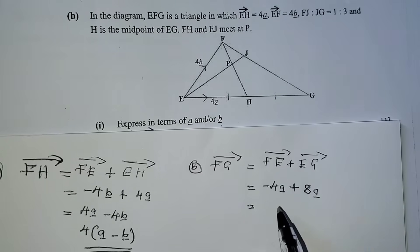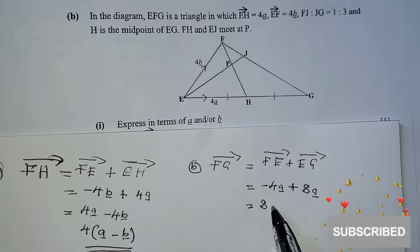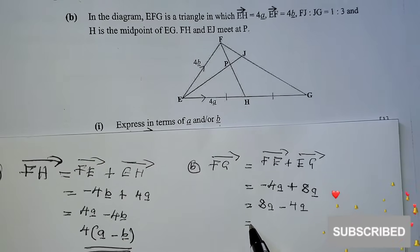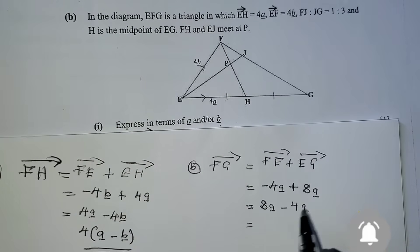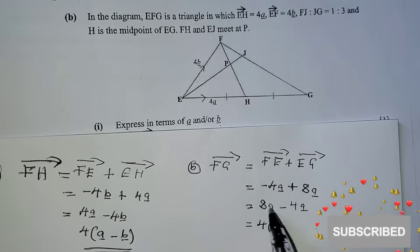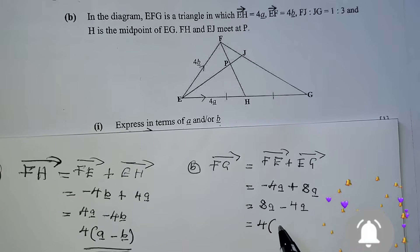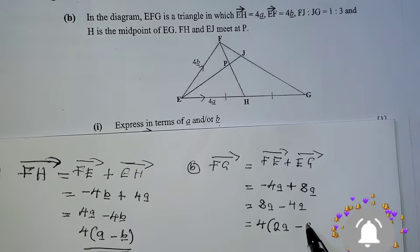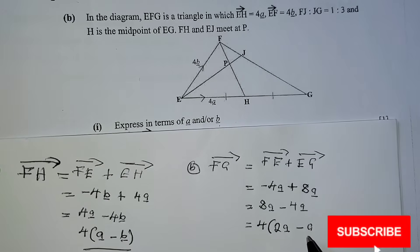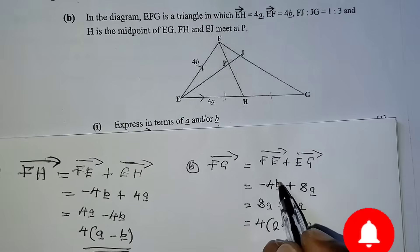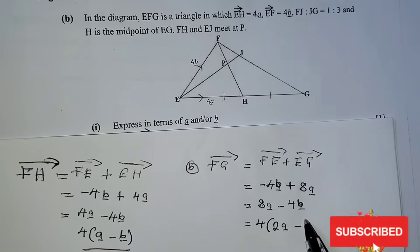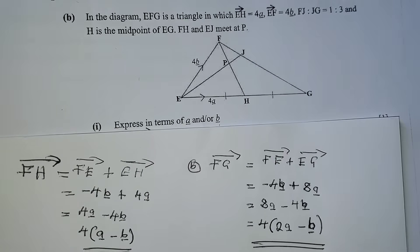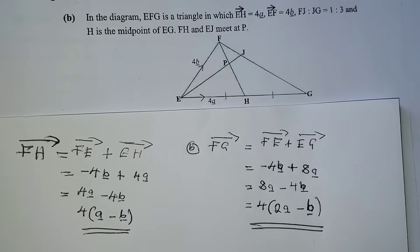We always start with the positive vector. So we say 8 vector a minus 4 vector b. You can still factorize — 4 is common. 4 into 8 gives 2a, and 4 into 4 gives 1, remaining with vector b. So the factorized answer is 4(2 vector a minus vector b). That is the answer.